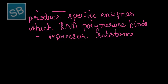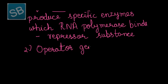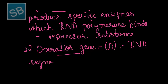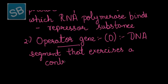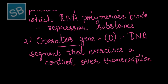The second type of gene that is part of the control gene includes the operator gene. Operator gene is depicted by capital O. It can be defined as a DNA segment that exercises control over transcription — that is, the formation of mRNA can take place only by the activation of the operator gene.